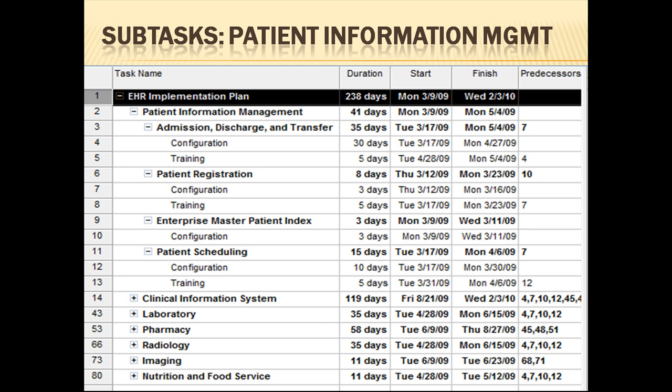When a task is dependent on more than one predecessor, you can separate them by commas and the software will automatically determine which dependent task has the latest completion date and will start the new task after that date. Here we can see the different subtasks for patient information management. These include Admission, Discharge and Transfer, Patient Registration, Enterprise Master Patient Index, and Patient Scheduling.